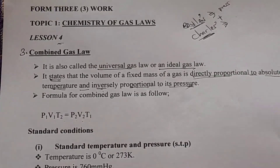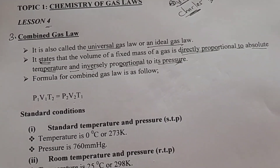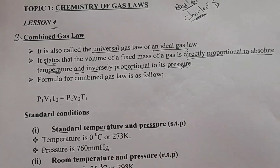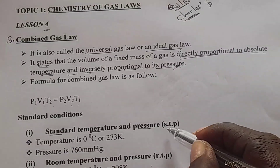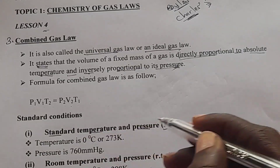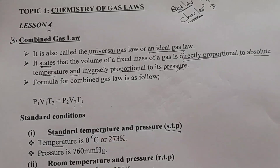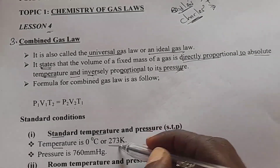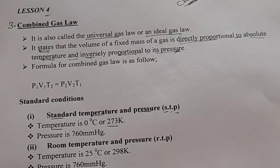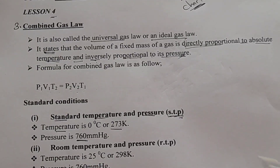Let's look at the standard conditions for the combined gas law. We deal with standard temperature and pressure, abbreviated as STP. At STP, temperature is zero degrees Celsius, which converts to 273 Kelvin. Pressure at STP is 760 millimetres of mercury.